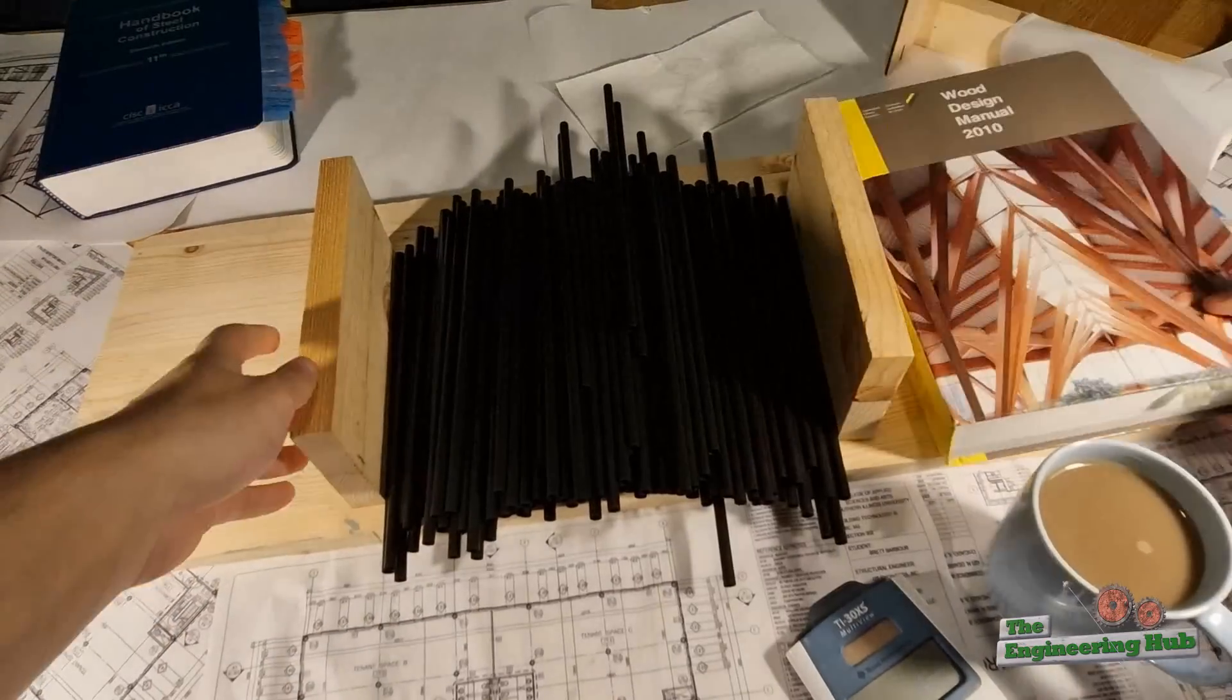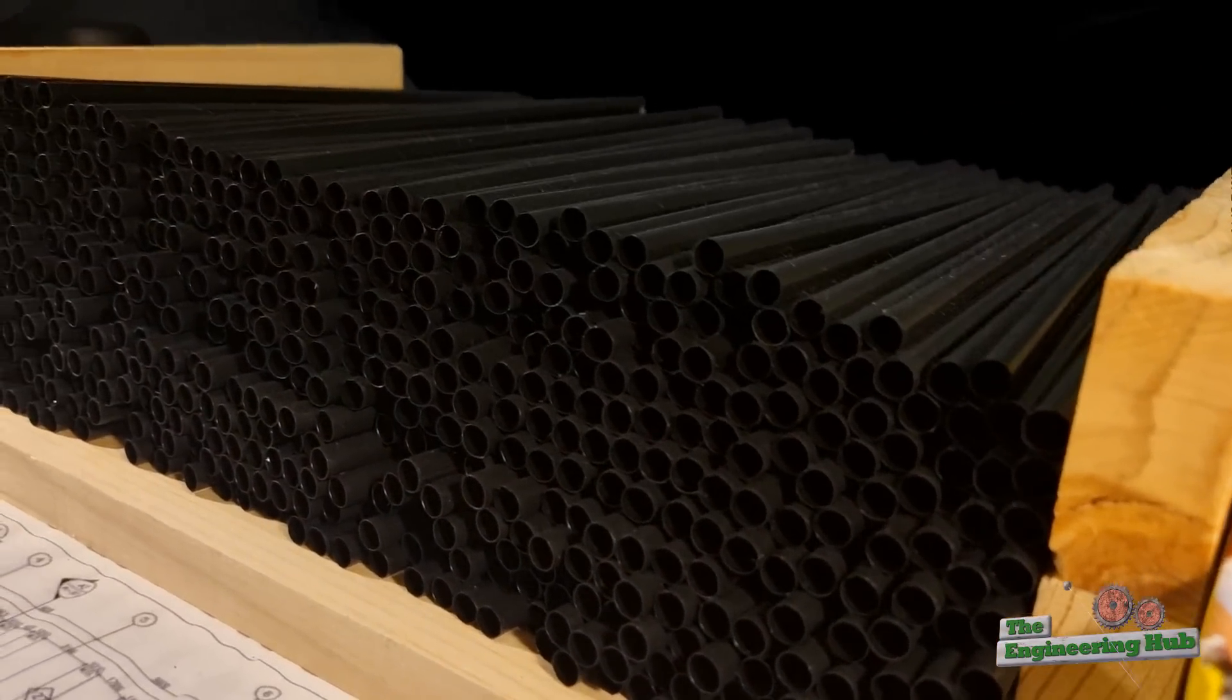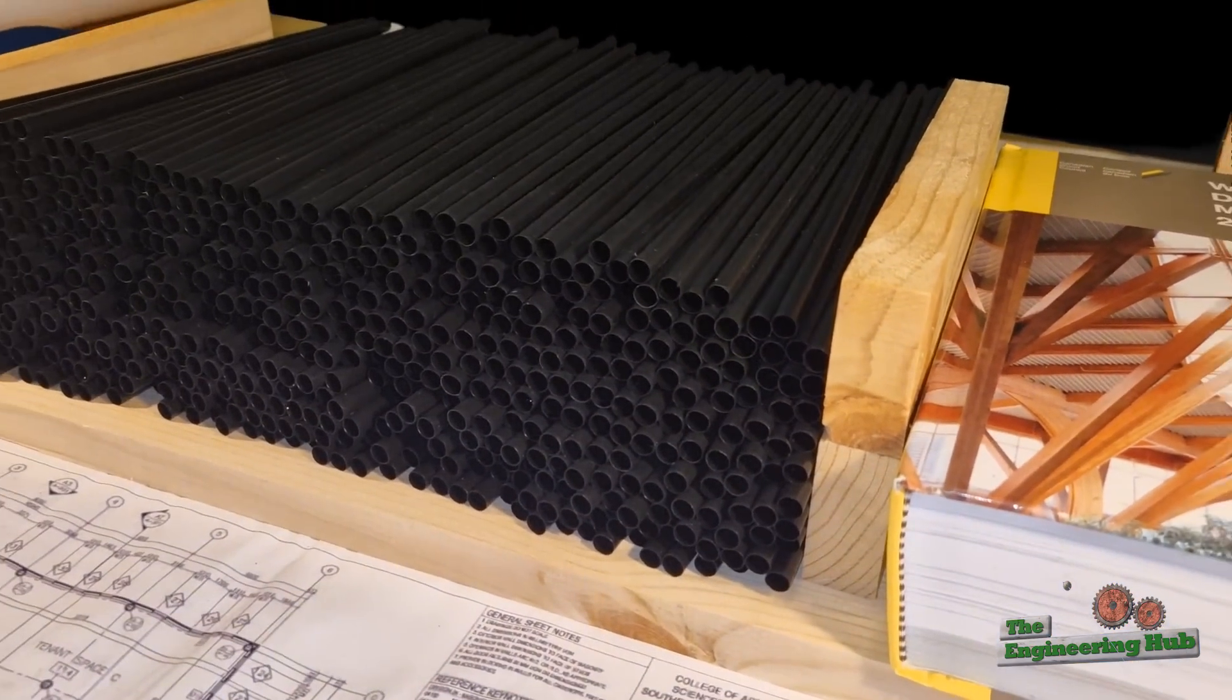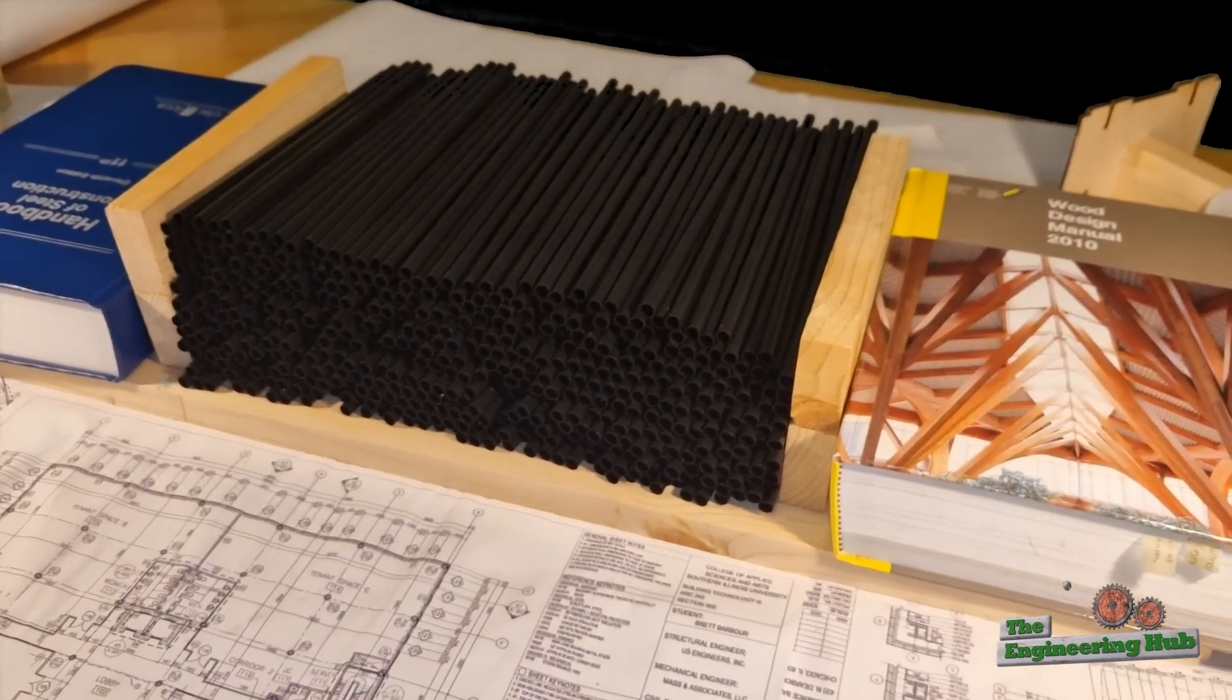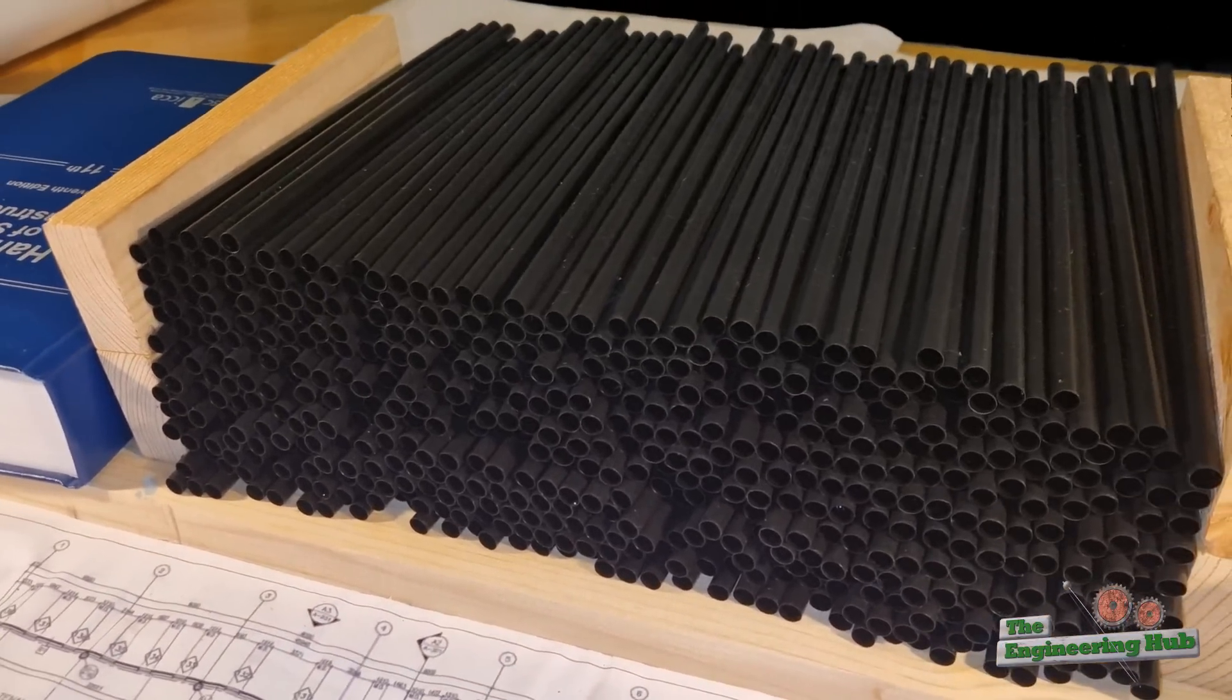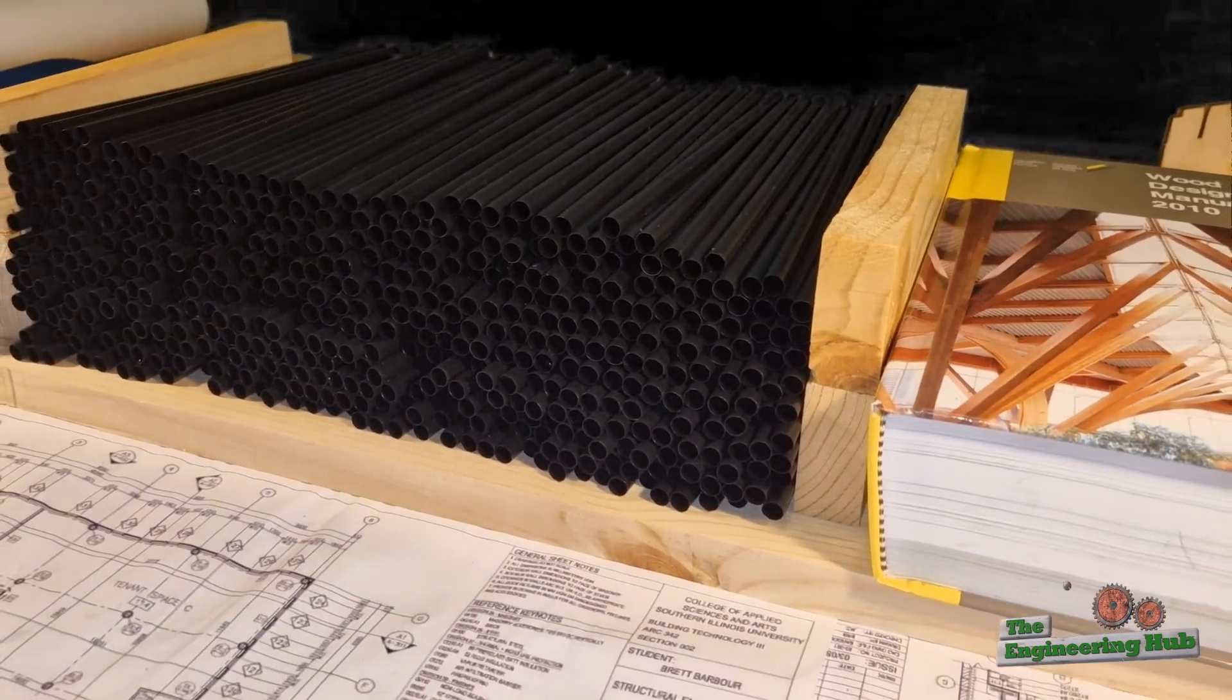This failure mechanism is well illustrated with a simple model. The straws in this case represent soil particles that get interlocked to form a block of soil. Representing the soil particles as long tubes helps us achieve a plane strain condition, which in simple terms means we can look at the soil in 2D. In reality, all failures are three-dimensional, but engineers often analyze them in a simplified manner that allows 2D simplifications.